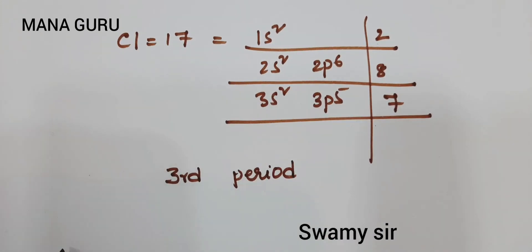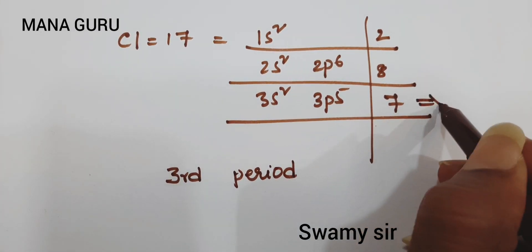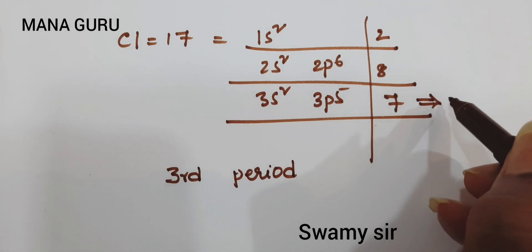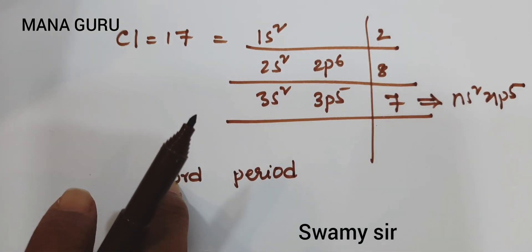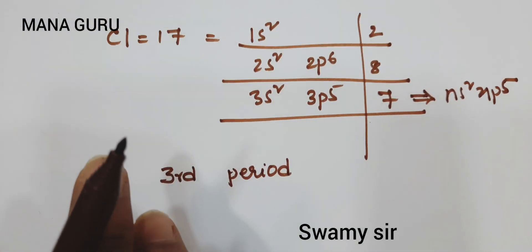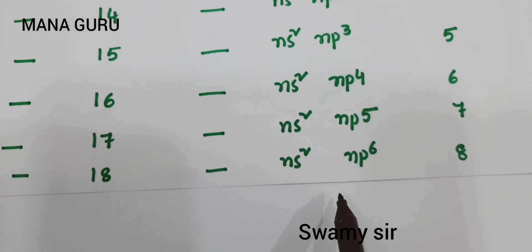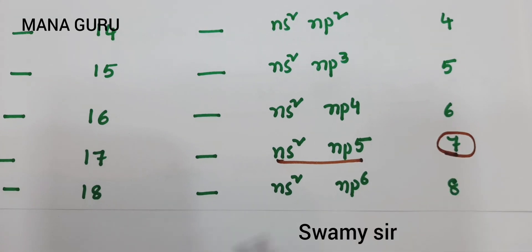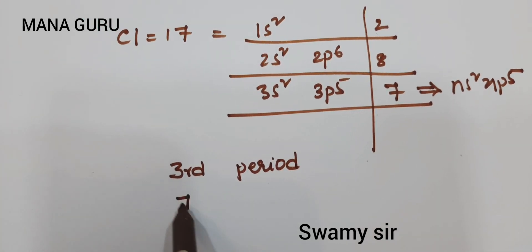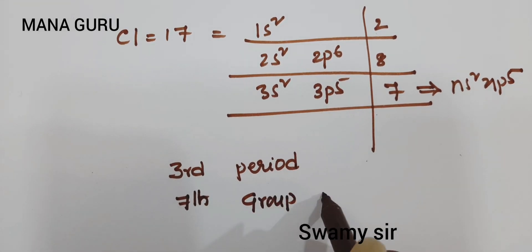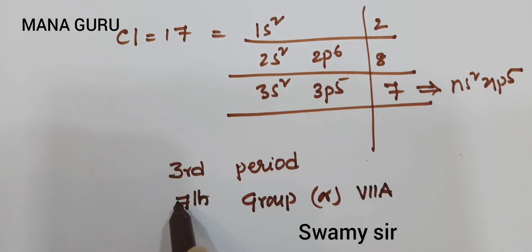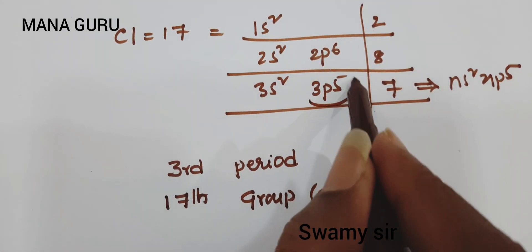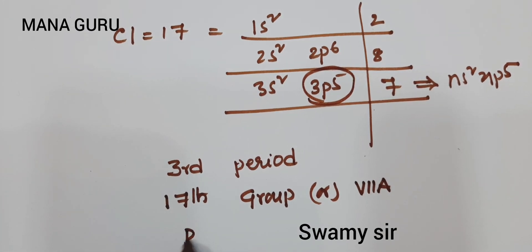Number of valency electrons means electrons in the outermost shell. It is similar to NS2 NP5. Looking at the table, NS2 NP5 indicates group 17 in the modern periodic table — or 7A in Moseley's. So chlorine belongs to the 17th group. The differentiating electron enters into the P sub-level, so it belongs to P block.